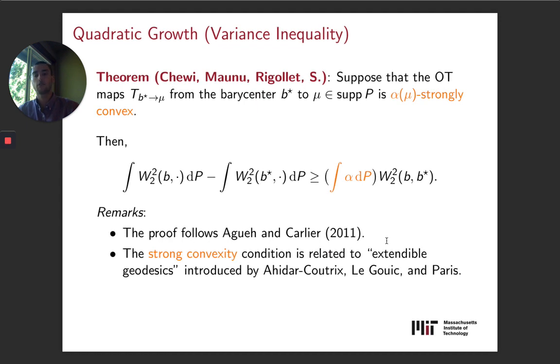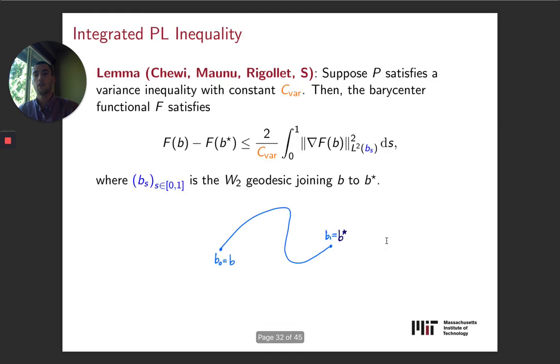Now for the second point here that we wanted to show, which is this PL inequality, we're able to show the following thing, which we call an integrated PL inequality. As you can see, what it says is we essentially get a PL inequality, except it's integrated. The gradient, the square gradient term is integrated along the W2 geodesic joining the current point B to the optimal, to the true barycenter B*. And we actually can't turn this into a full PL inequality in the general case, as far as we know.